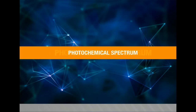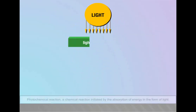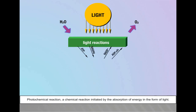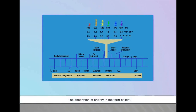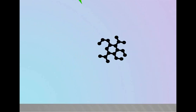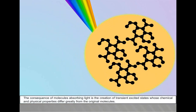Photochemical spectrum. In this video, we are going to see about photochemical spectrum. A photochemical reaction is a chemical reaction initiated by the absorption of energy in the form of light. The consequence of molecules absorbing light is the creation of transient excited states whose chemical and physical properties differ greatly from the original molecules.